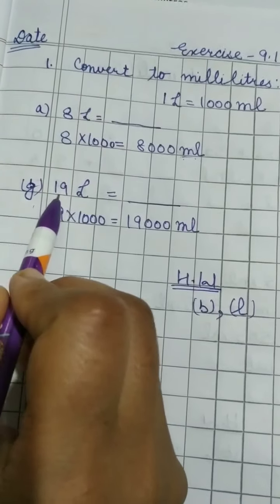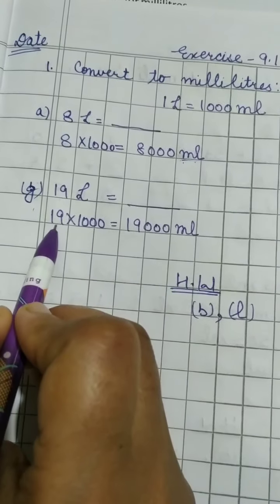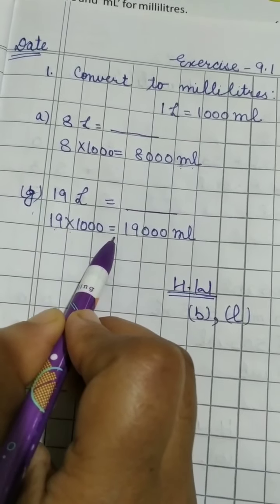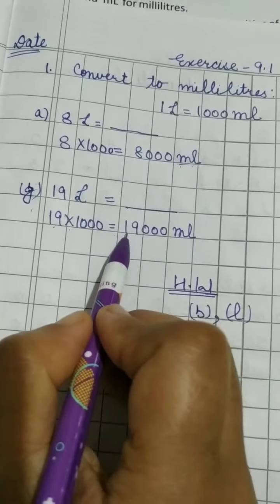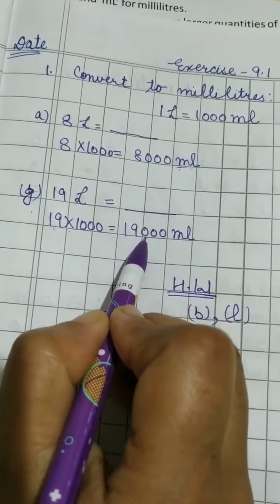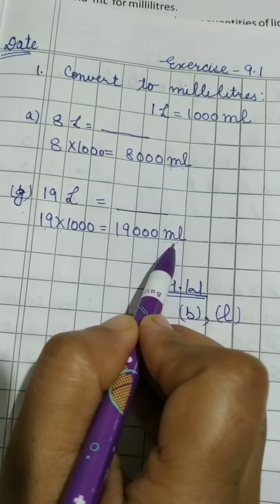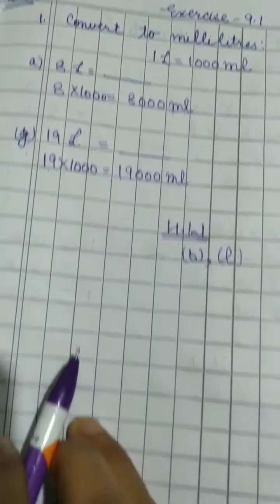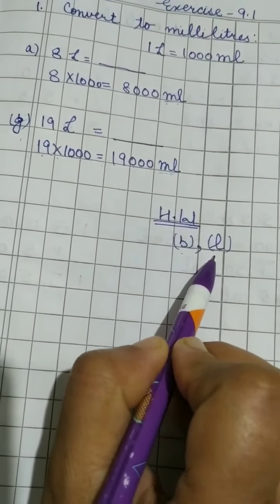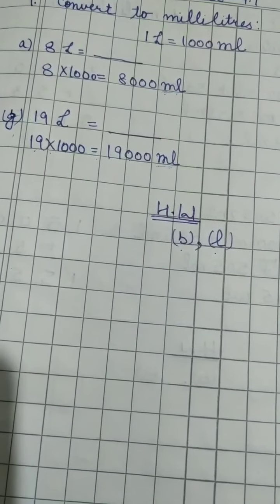For part G: 19 liters equals dash. Same process — 19 multiplied by 1000: 19 ones are 19, then add 3 zeros, so 19000 ml. Always write the unit. The homework for this exercise is part B and part L. Thank you, children.